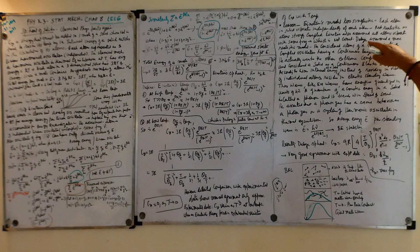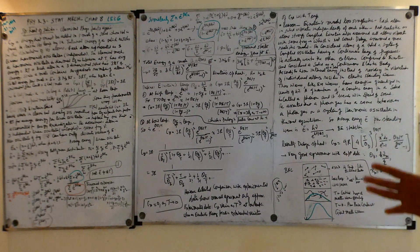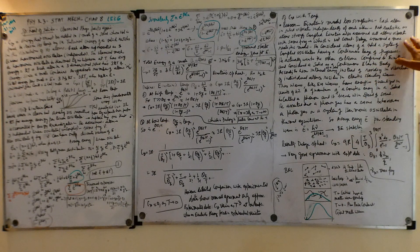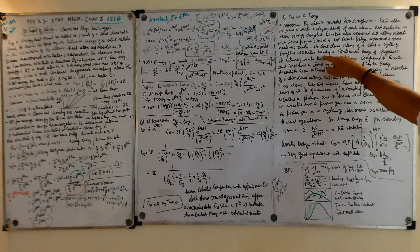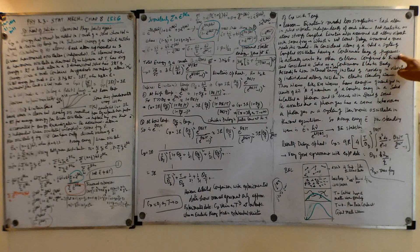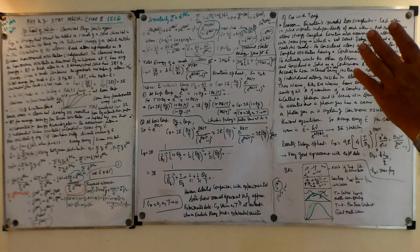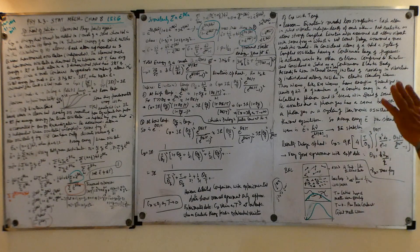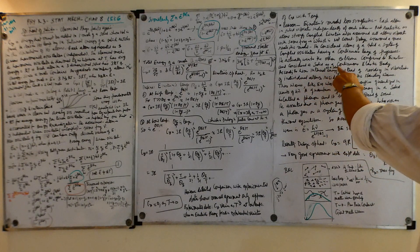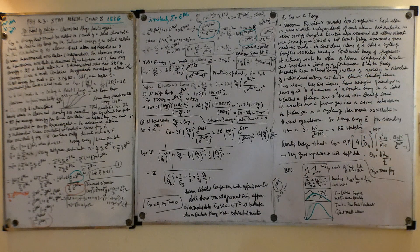Then came Debye, who went to the other extreme. He said a more realistic model would consider the atoms of a solid as a system of coupled oscillators having a continuous range of frequencies — from zero to some maximum value. He went to the opposite end compared to Einstein, treating a solid as a continuous elastic body.